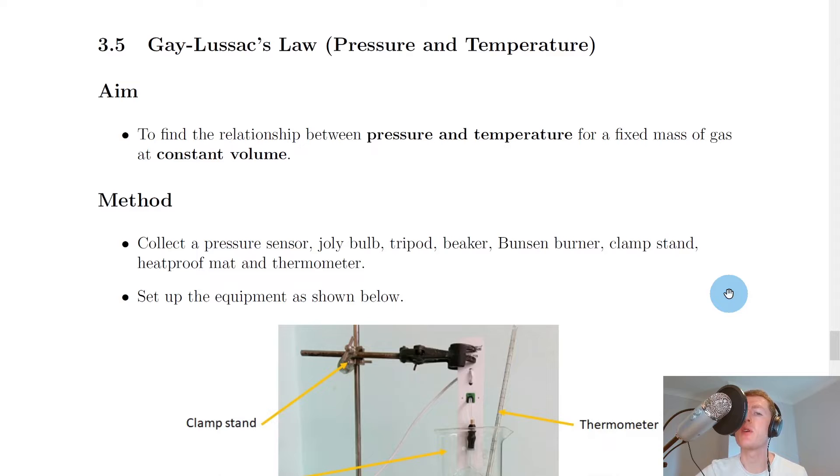Now just like we did for the experiment on Boyle's Law, we're going to look at the steps of a scientific report that you could write if you'd carried out this experiment on Gay-Lussac's Law. So the aim to begin with is to find the relationship between pressure and temperature for a fixed mass of gas at constant volume.